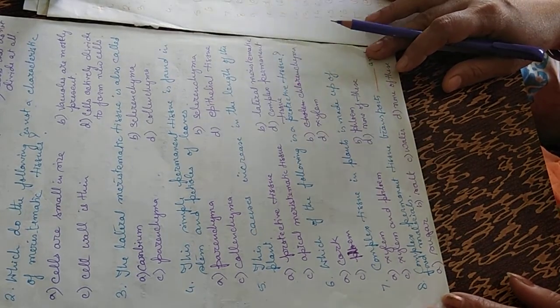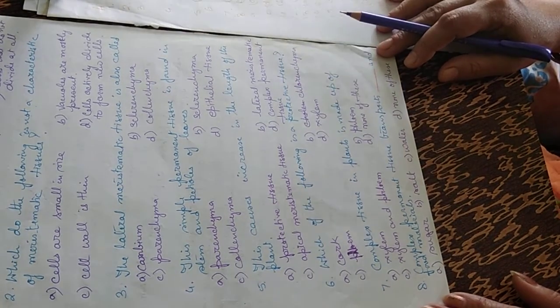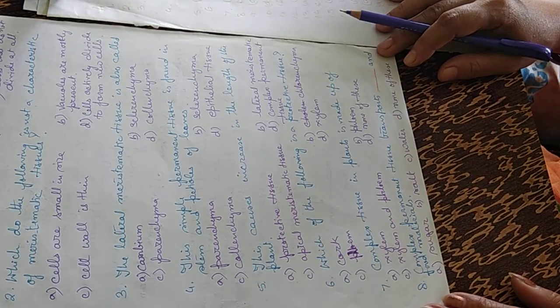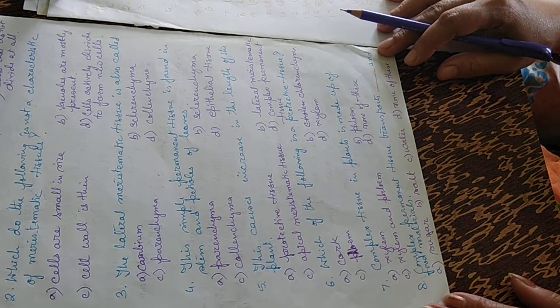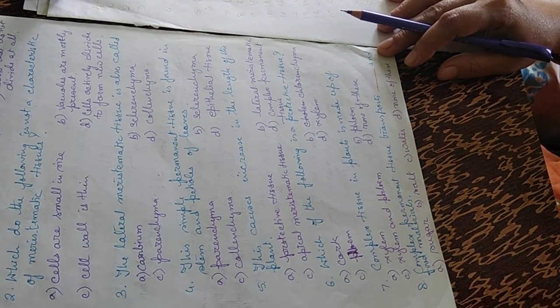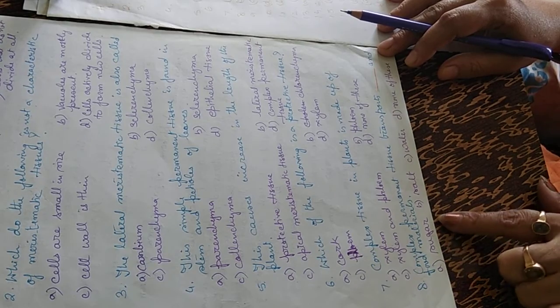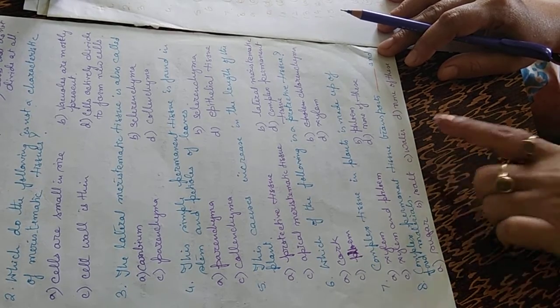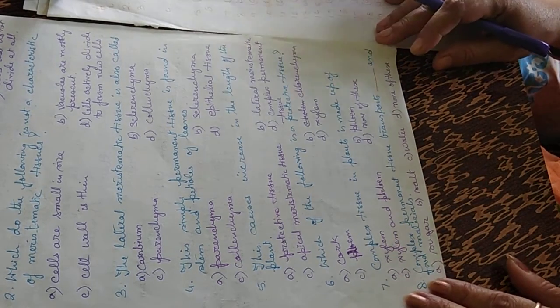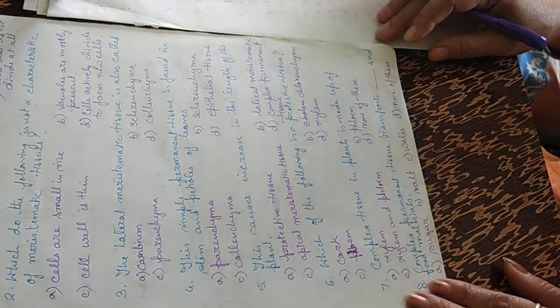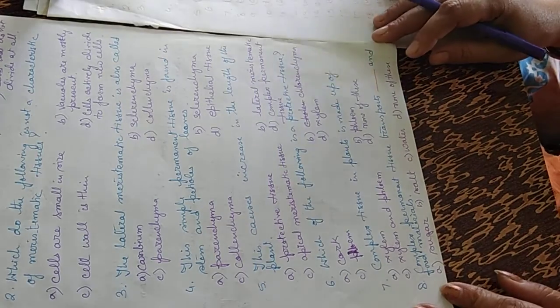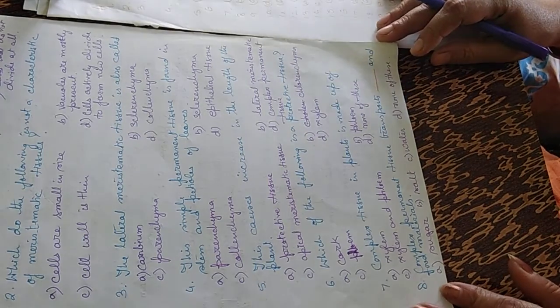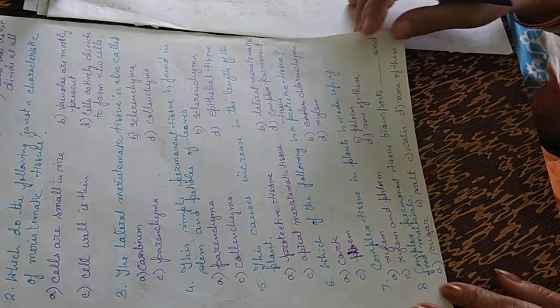Question number eight: complex permanent tissue transports dash and food materials — what does it transport? Options are sugar, salt, water, and none of these. It transports C — that is water.